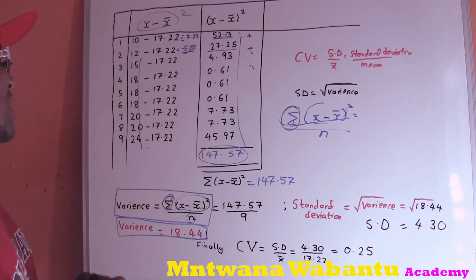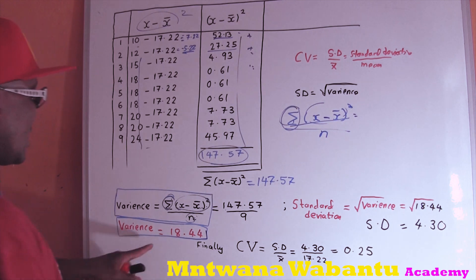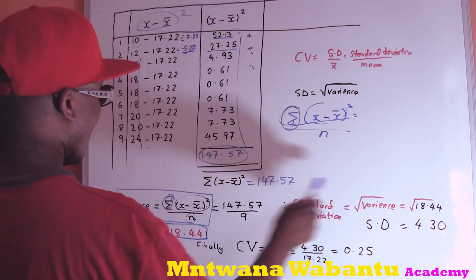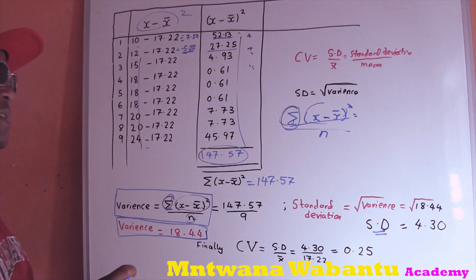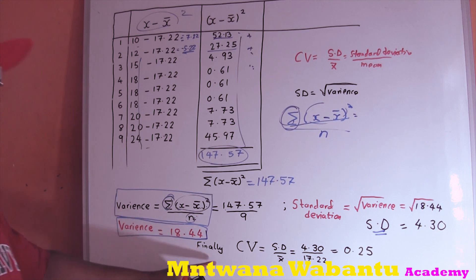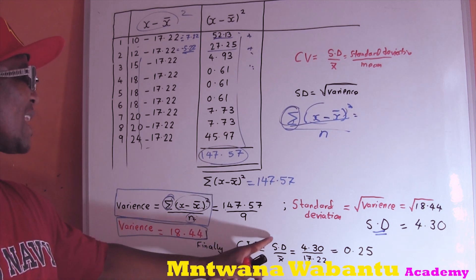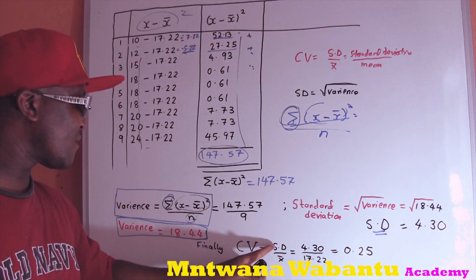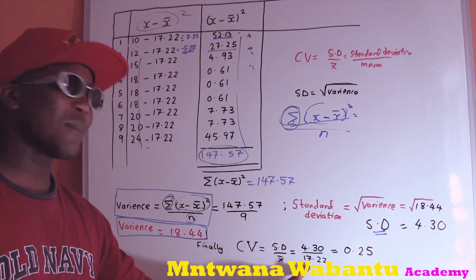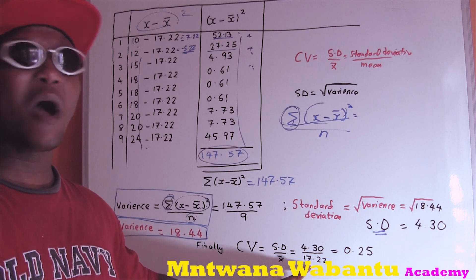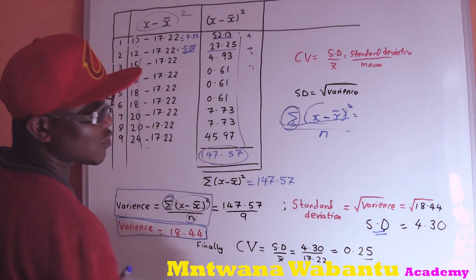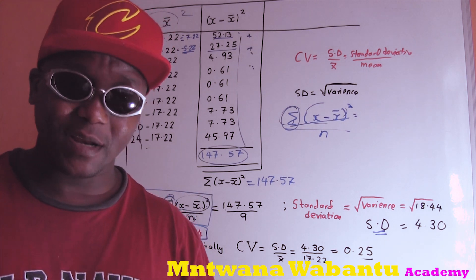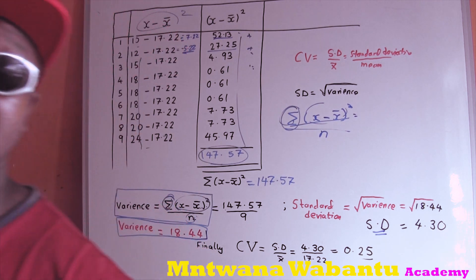To get the standard deviation, you take the square root of the variance. The variance is 18.44, so the square root gives us a standard deviation of 4.3. Now we finalize the coefficient of variation: standard deviation divided by mean equals 4.3 divided by 17.22, which gives us a coefficient of variation equal to 0.25. That's how you do it.